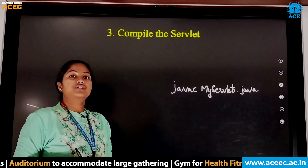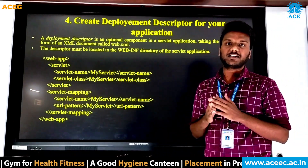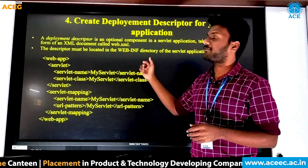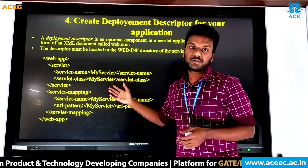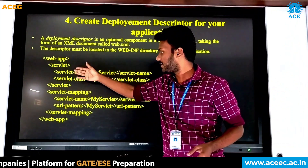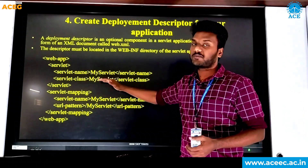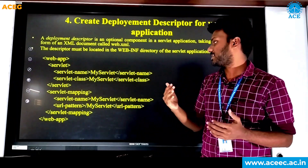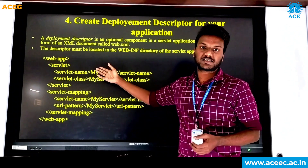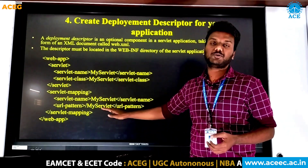Now let us see the fourth step — creating a deployment descriptor. The deployment descriptor is nothing but a web.xml file, which should be located in the WEB-INF directory. The root tag is webapp, and there are two child tags: servlet and servlet-mapping. In servlet, I have a servlet-name as 'MyServlet' and servlet-class as 'MyServlet'. The servlet-class name should be the same as the Java servlet class name. In servlet-mapping, the servlet-name should match, and the url-pattern is /MyServlet, which should match the URL pattern used in the form tag of an HTML document.